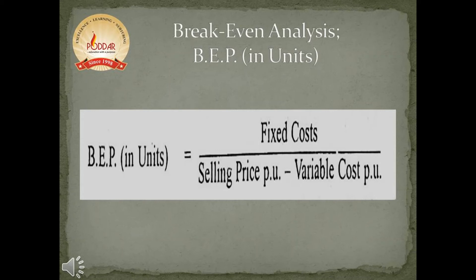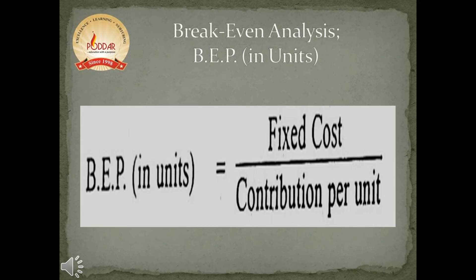Let us now talk about break-even point. It can be calculated in units as well as in values or volumes. BEP in units is calculated as fixed cost divided by selling price per unit minus variable cost per unit. We can also calculate BEP in units as fixed cost divided by contribution per unit, which is the modified form of the earlier formula.